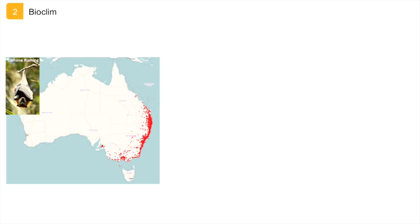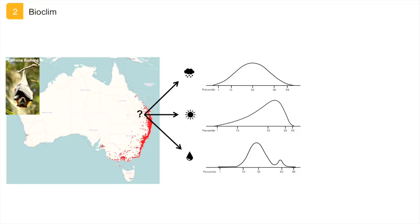To predict the probability of species occurrences in any given location, Bioclim compares the values of the environmental variables at that location to the percentile distribution of the values from known occurrence locations. The 50th percentile refers to the median, which divides the data exactly in half. The closer the value of the environmental variable at the unknown location is to the 50th percentile, the more suitable the location is for a species to occur there, and thus the higher the probability of occurrence.